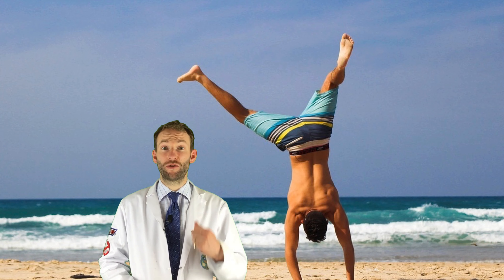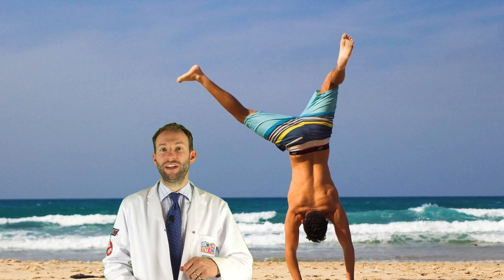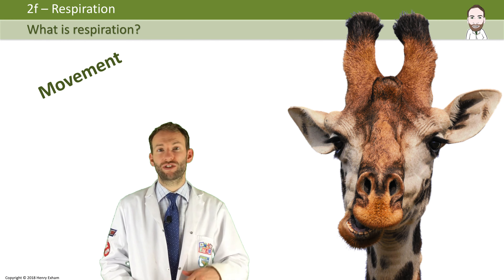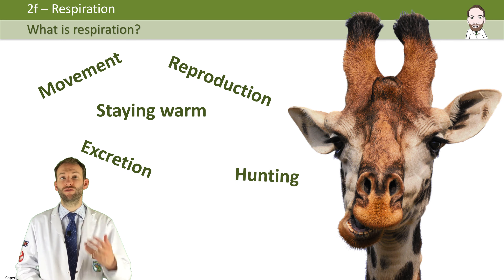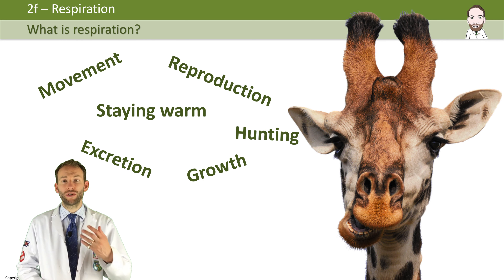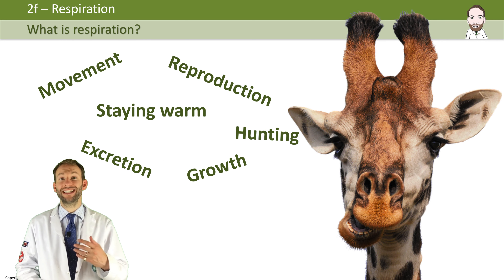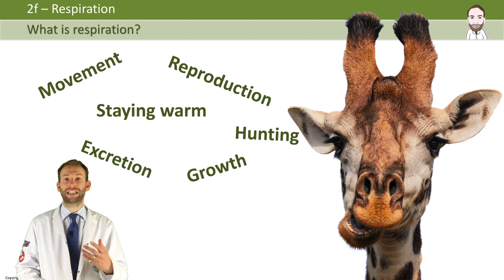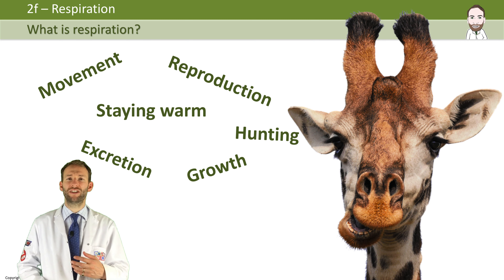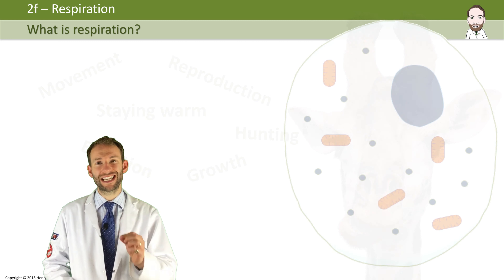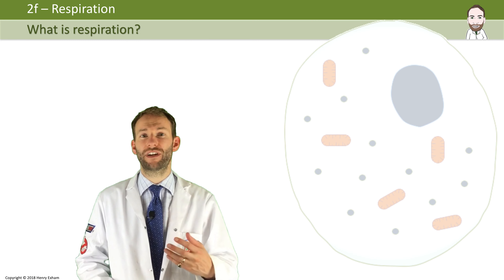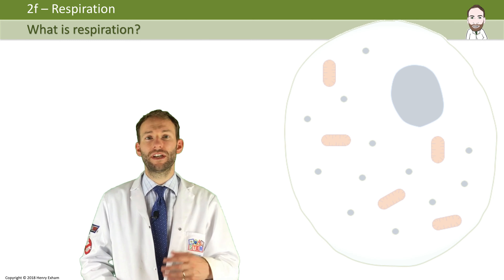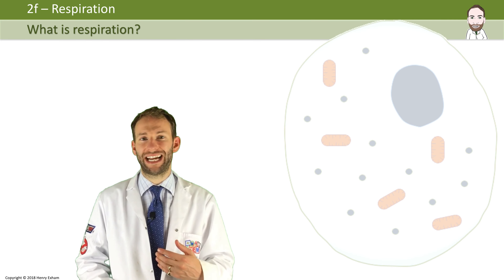Being alive requires energy for movement, reproduction, keeping warm, excretion and growth. Organisms get this energy through a process in their cells called respiration. But it's not only these big processes that require energy — every single cell itself needs energy in order to carry out many of its functions. We call these functions metabolic reactions.